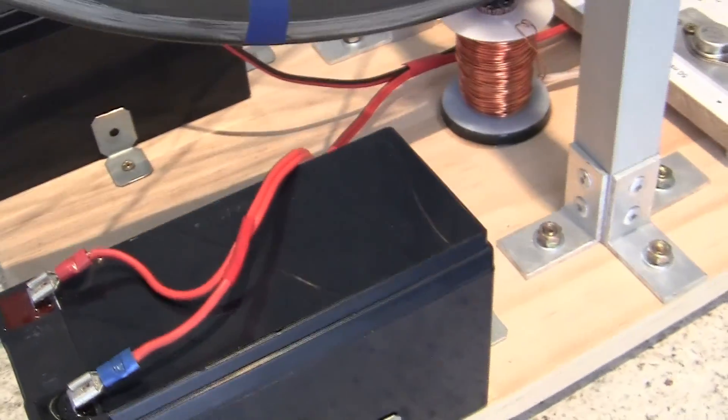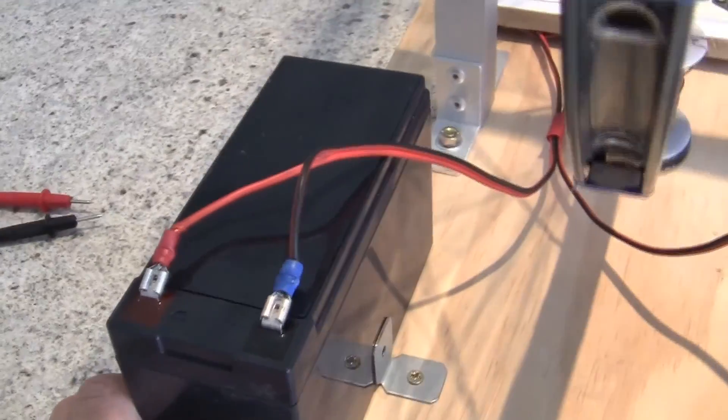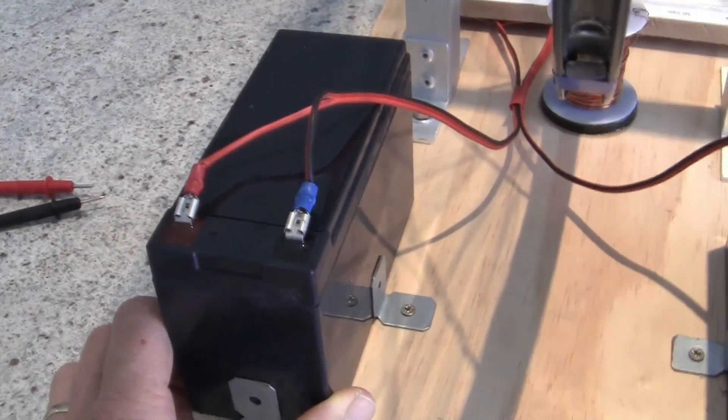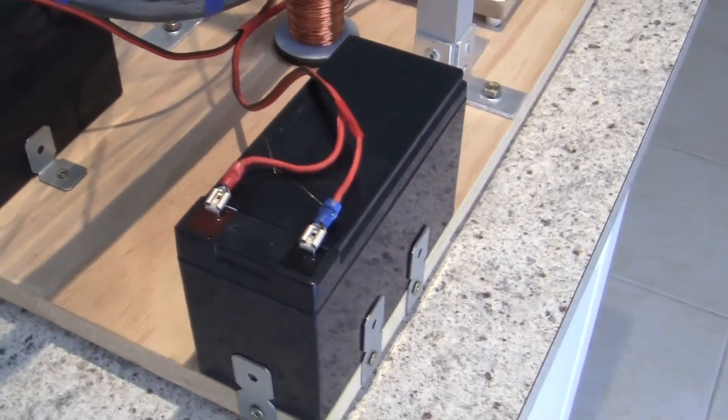Now we've got two batteries here. We've got one battery, this battery over here actually, is your run battery. This is the battery that powers the unit. And over here on this side, this is the battery that's actually being charged by the unit.